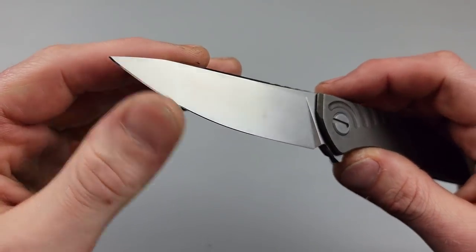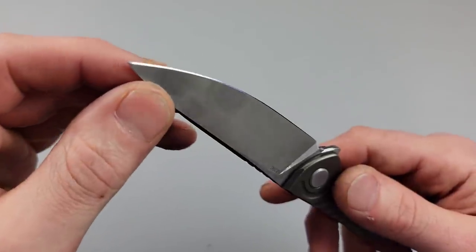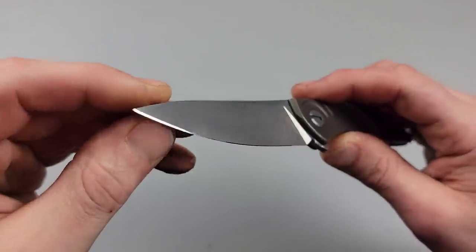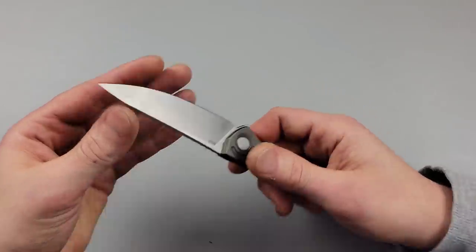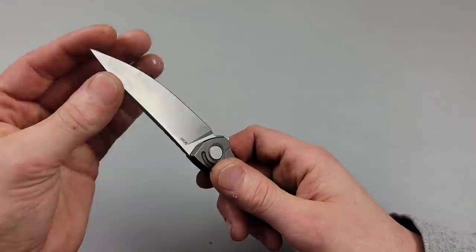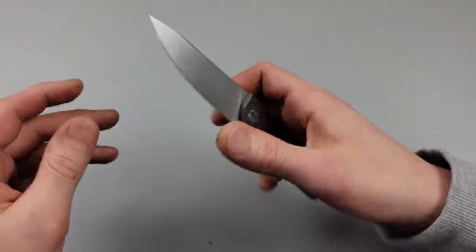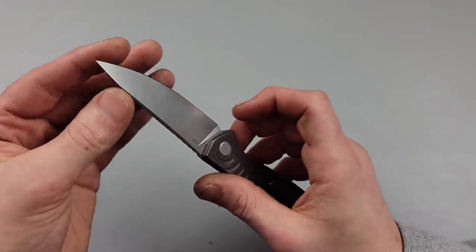So without doing any modifying or anything like that, I just kept the same angle that was already on there which is a pretty high angle. I put a mirror polished edge on it. Maybe I should have put a toothy edge on it. It's super sharp. It's shaving sharp. No problems with that.